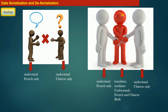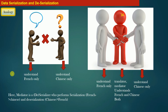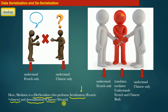This is a simple real-world analogy that maps to data serialization and deserialization. The mediator is the deserializer who performs serialization — here serialization means converting the statement spoken by the French guy into Chinese. The mediator also performs deserialization — converting the statement from Chinese back to French. So the mediator is a person who facilitates bi-directional communication between the French and the Chinese guy, perfectly mapping to the concept of data serialization and data deserialization.